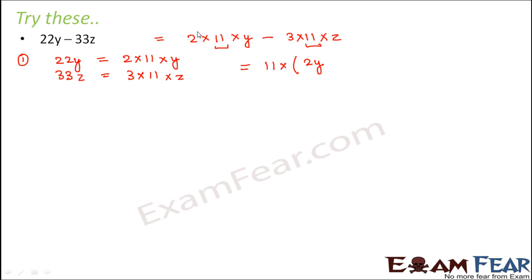b would be 2y because here 2y is left, and this side it is 3z. So it's 11 into 2y minus 3z. This is the factor form of the given expression. Let us try one more.